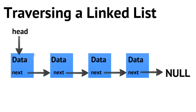Being able to traverse through our linked list — or said more simply, being able to visit each node in succession — is a really important operation. Once we master that operation, we can print out data that exists in each node, find where to insert a particular node, perform deletion, or modify the data in all of our nodes. In all those cases, we need a mechanism to visit or traverse through each one of our nodes.